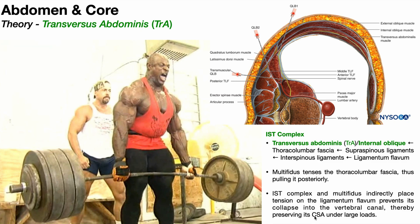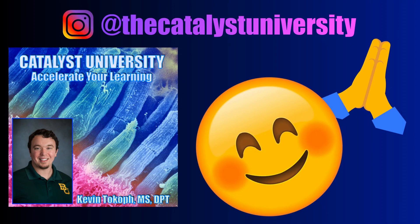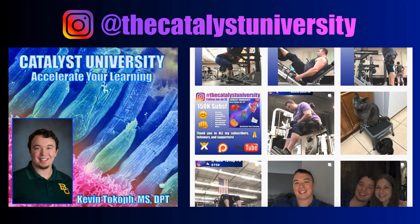Overall, during spinal loading the IST complex and multifidus indirectly place tension on the ligamentum flavum and prevent its collapse into the vertebral canal, preserving the cross-sectional area under large loads. That concludes our discussion on the function and structure of the transversus abdominus. In the next video I'll show you how to activate that muscle — first how to palpate it, then how to activate it, and then how to strengthen it. Thank you for your support and be sure to check out my Instagram.